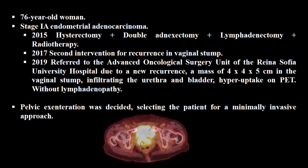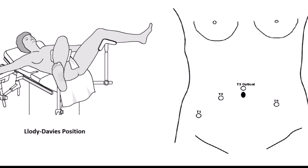In 2017, she was re-operated due to recurrence in the vaginal stump. Two years later, a new recurrence was identified with a mass of about 5 cm in the vaginal stump, infiltrating the urethra and bladder. Hyperuptake on PET with no lymphadenopathy. Pelvic exenteration was decided, selecting the patient for a minimally invasive approach.